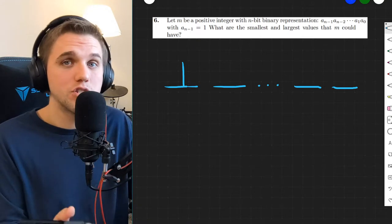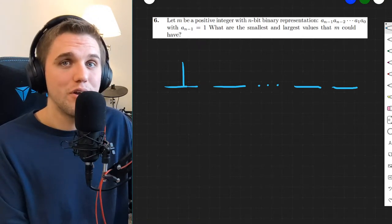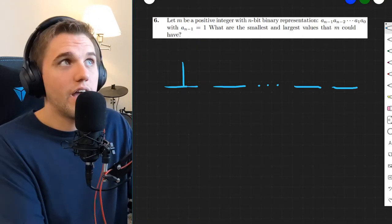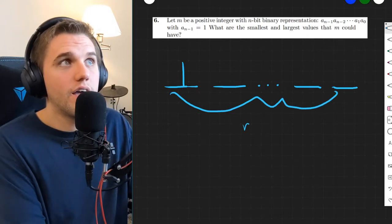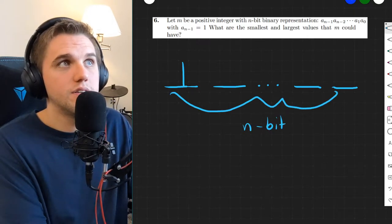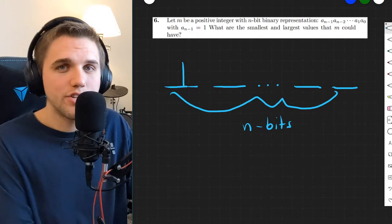And if you were to try to build the smallest possible binary number, what would you put in these placeholders? And you have specifically n bits. So how would you answer this question?